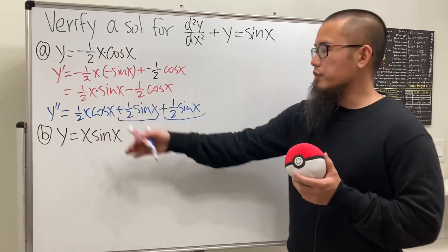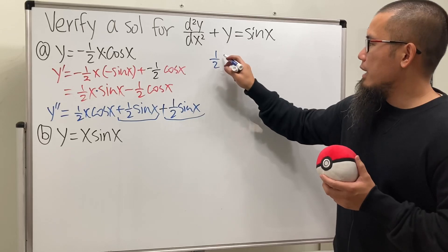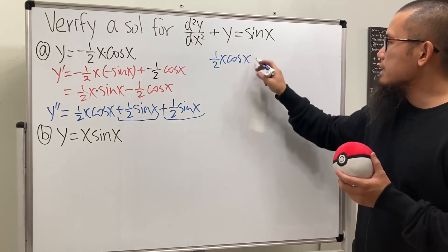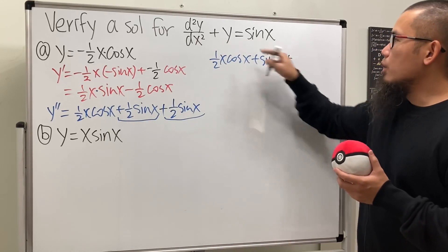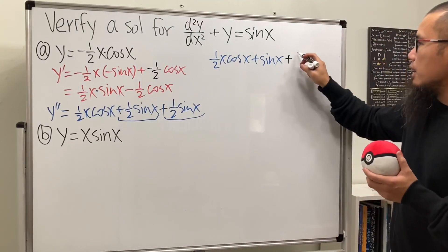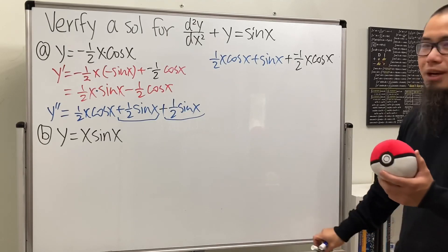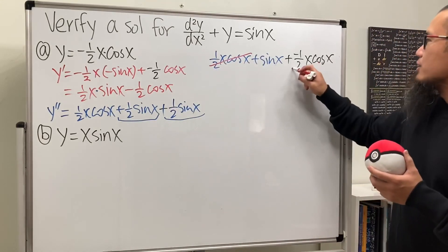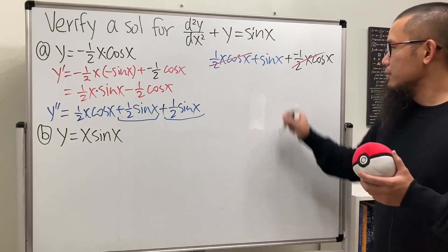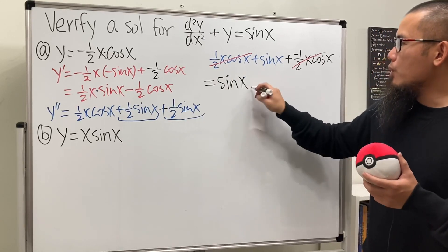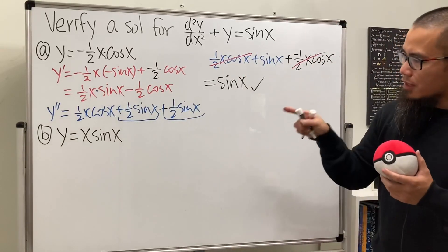Plugging into y'' + y: y'' = (1/2)x·cos x + sin x, and y = -(1/2)x·cos x. Adding: (1/2)x·cos x + sin x - (1/2)x·cos x = sin x. The (1/2)x·cos x terms cancel, giving exactly sin x. This confirms the first function is a solution to y'' + y = sin x.